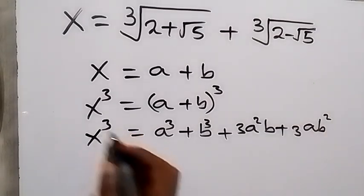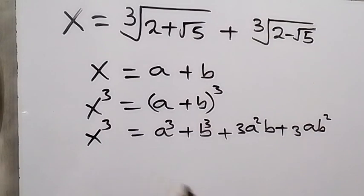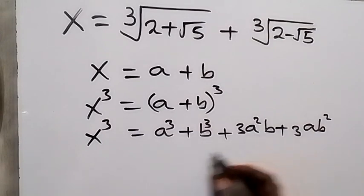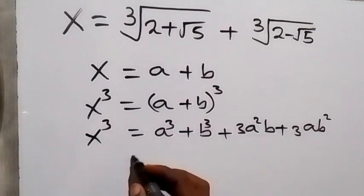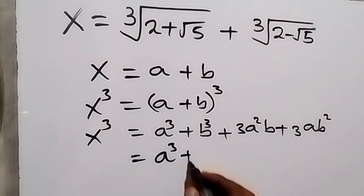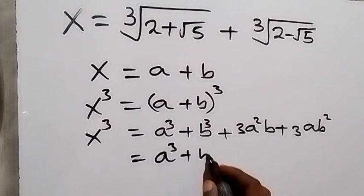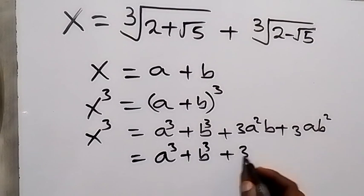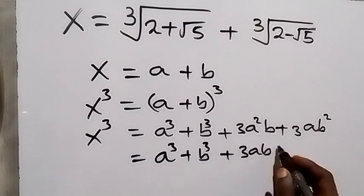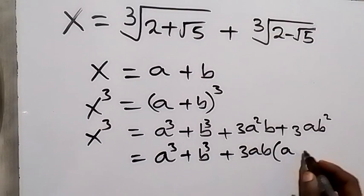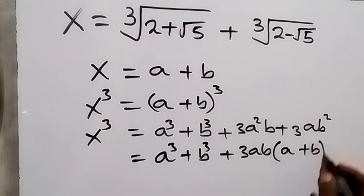The left-hand side is still x cubed. When we factorize, 3ab is common, so this becomes a cubed plus b cubed, plus 3ab times (a + b).